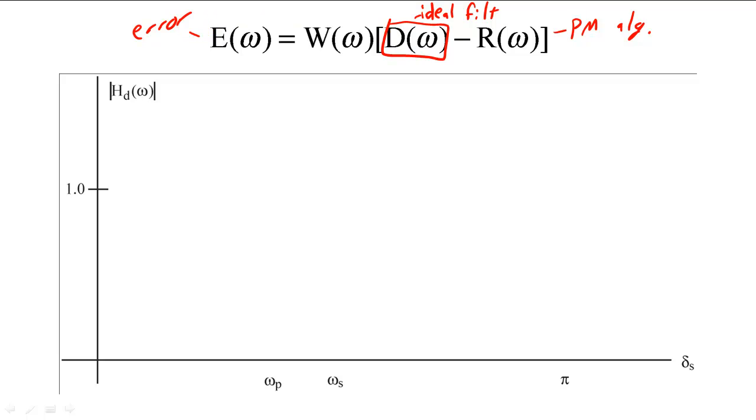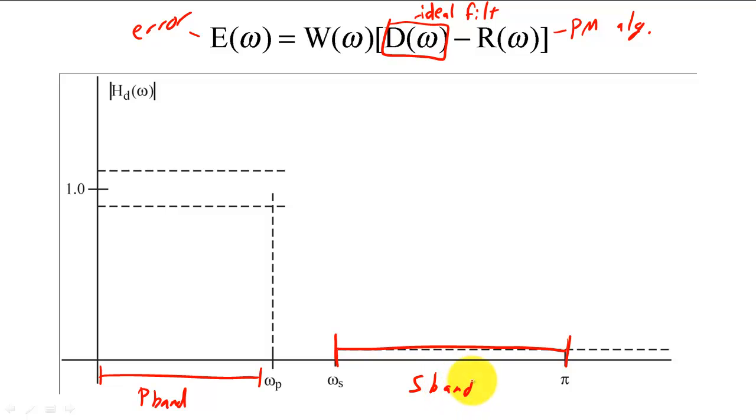The ideal filter would be defined from 0 to a passband cutoff frequency and from a stopband starting frequency to pi. As mentioned before, the transition band is left undefined so we can minimize the error in the passband and the stopband.